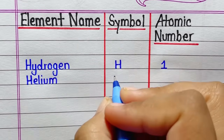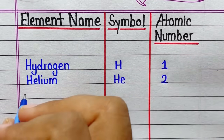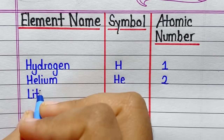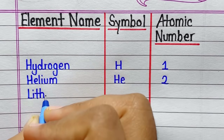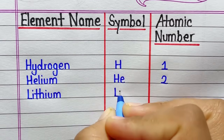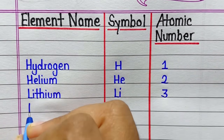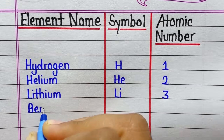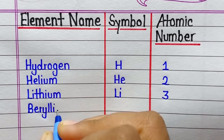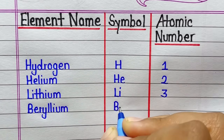Hydrogen, symbol is H and atomic number is 1. Helium, symbol is He, atomic number is 2. Lithium, symbol is Li, atomic number is 3. Beryllium, symbol is Be, atomic number is 4.